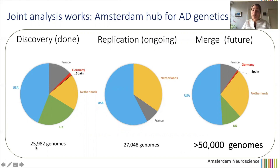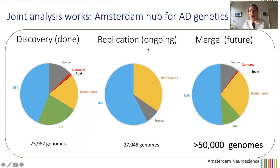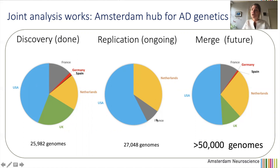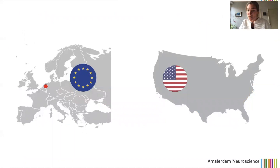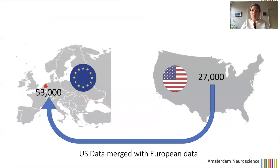Now we have the discovery dataset done on these 26,000 genomes. But the genetics field says it will only believe results if you show them again in a separate independent dataset. So we had to collect another 27,000 genomes and are now doing exactly the same analysis to see whether we can identify those same genes again. We downloaded a lot of data from the US, generated our own data, and included some data from France. We now have 53,000 genomes on our server.